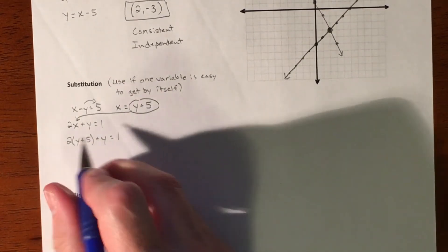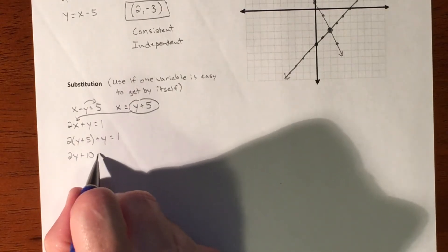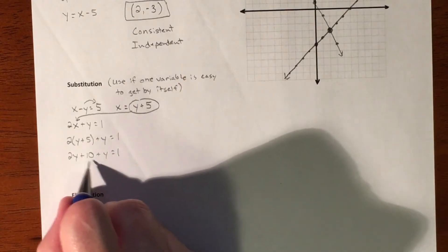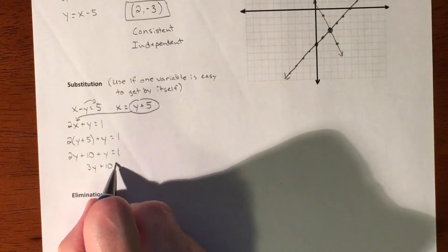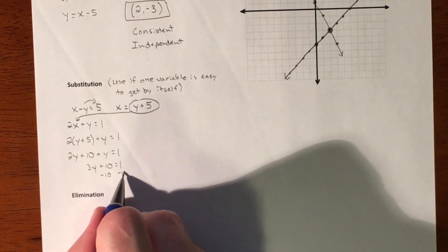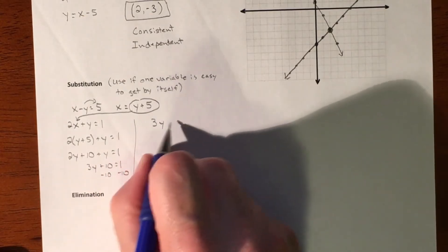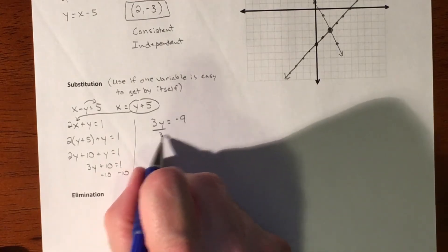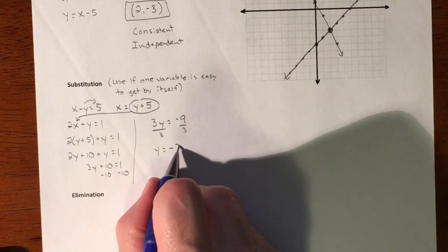So now we can do the math here. So we'll distribute. So 2y plus 10 plus y equals 1. We have like terms. So we'll have a 3y plus 10 equals 1. We'll subtract our 10. We have 3y equaling negative 9. Divide by 3. Y is going to get us negative 3.